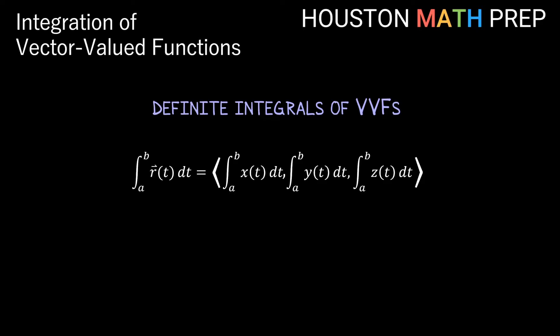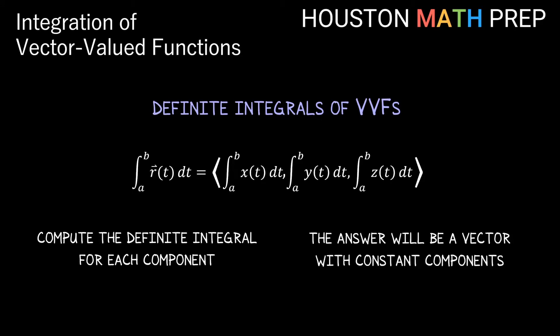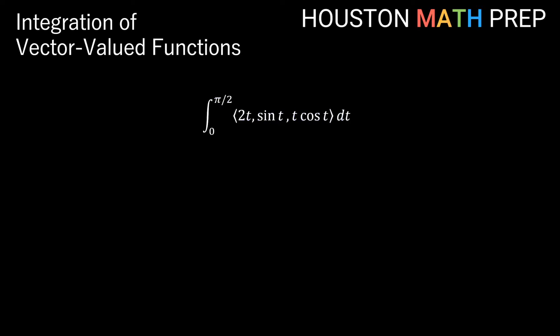For definite integrals of vector-valued functions, where you have bounds of integration, we'll do a similar thing of just using the bounds to compute a definite integral for each component. After we integrate each piece, we'll be plugging in values and subtracting, so our answer will be a vector with constant components. Let's look at an example: the integral from 0 to pi over 2 of the vector-valued function 2t, comma sine of t, comma t cosine of t.